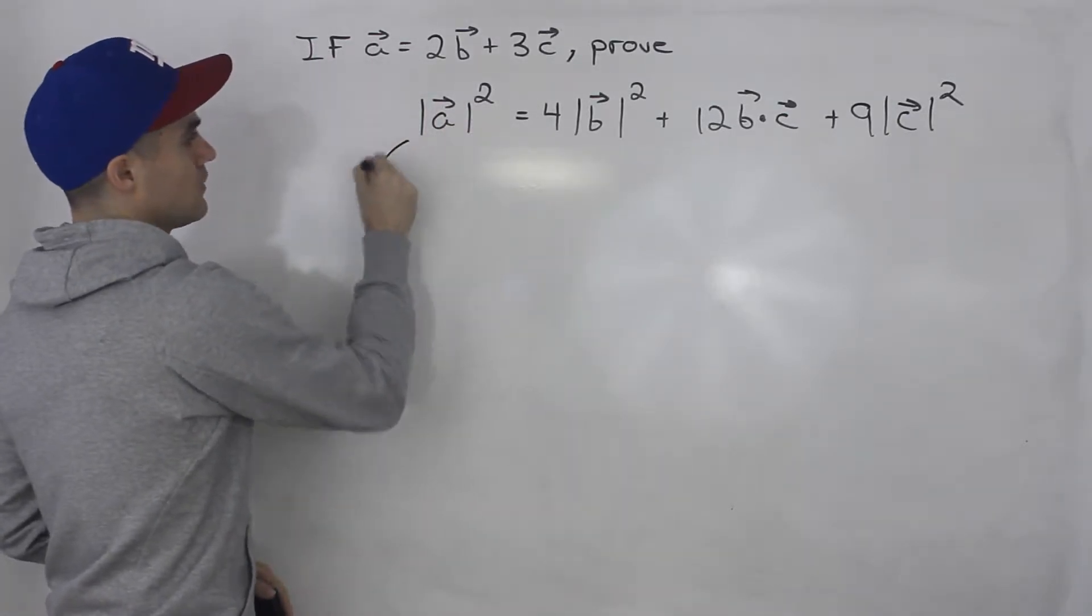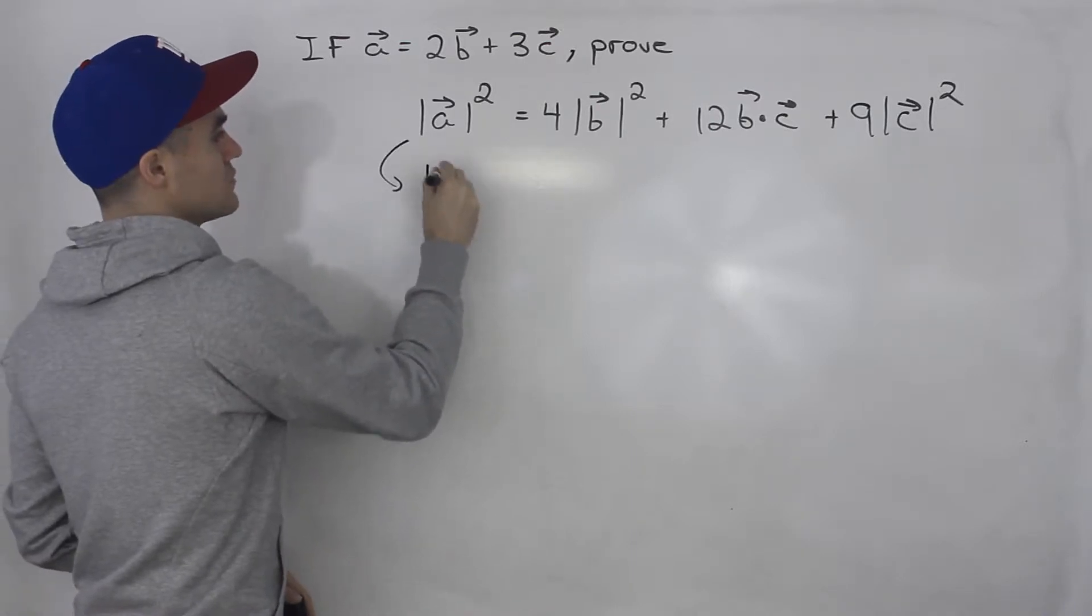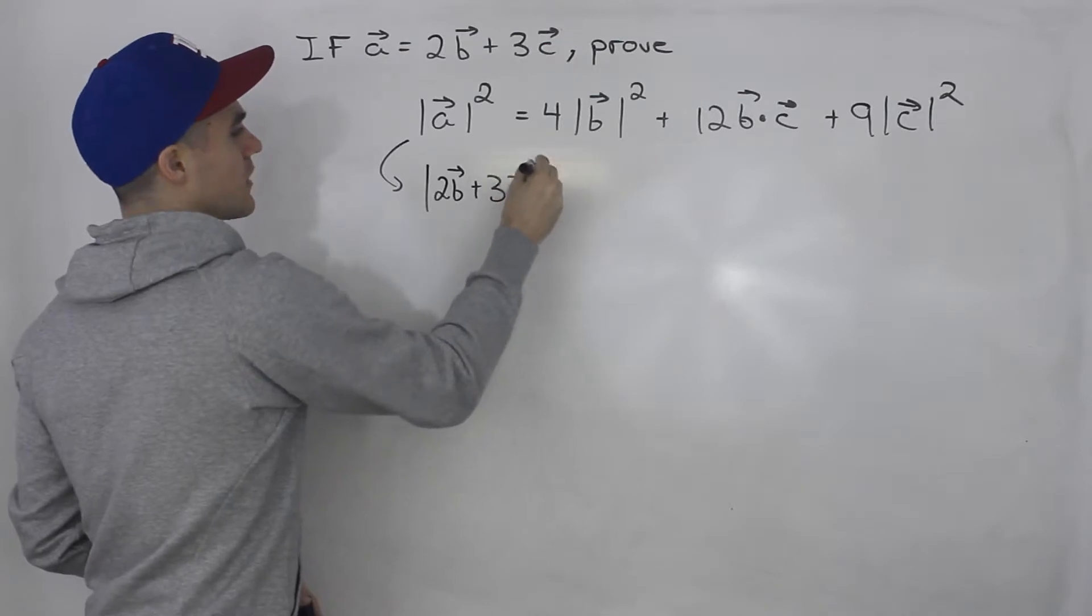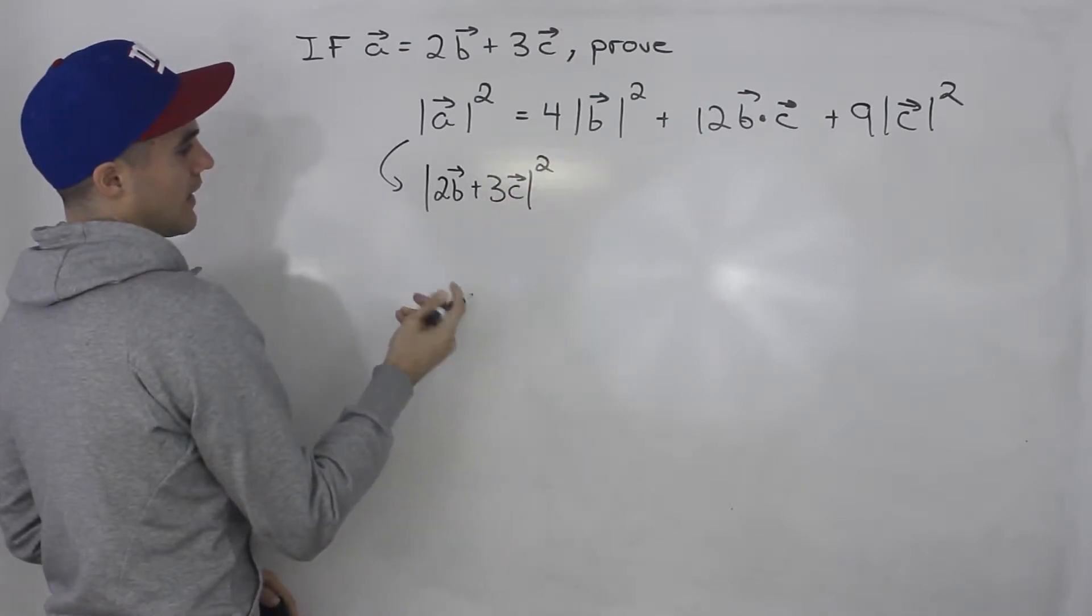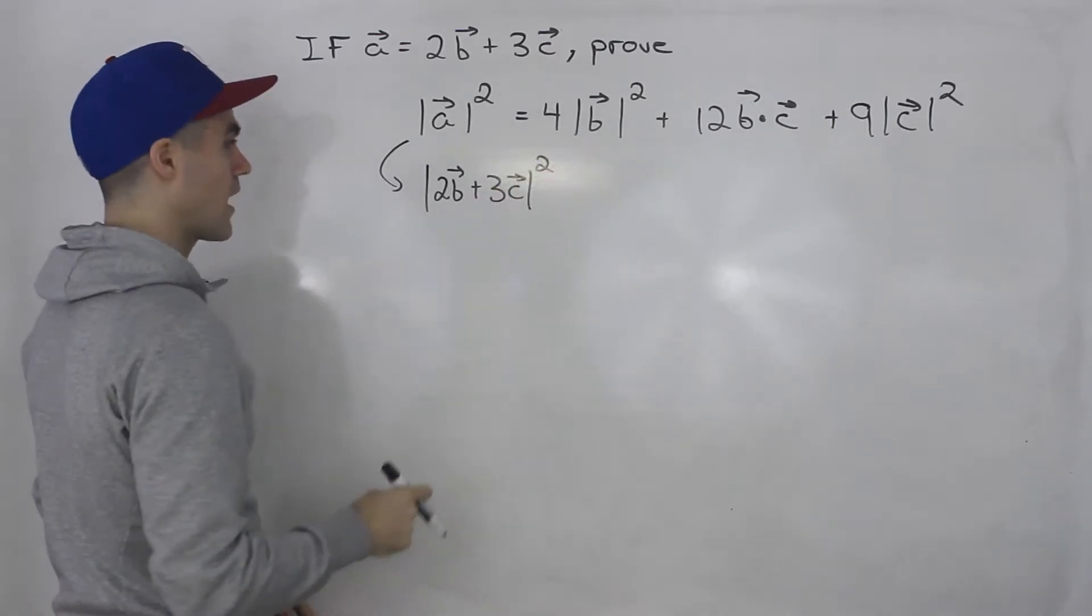So we can rewrite this left side here as the magnitude of 2b plus 3c squared. And now we can try to work with this and make it equal that right side.